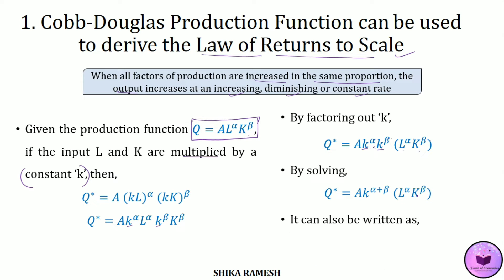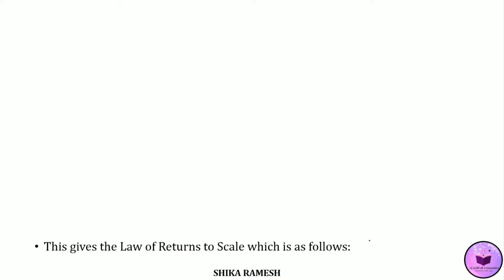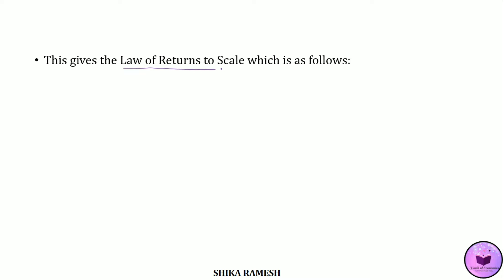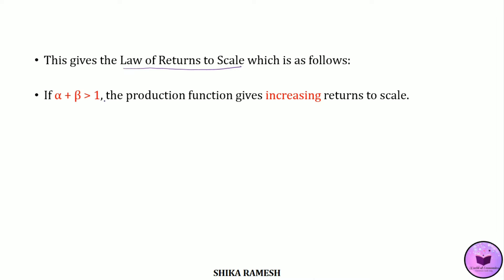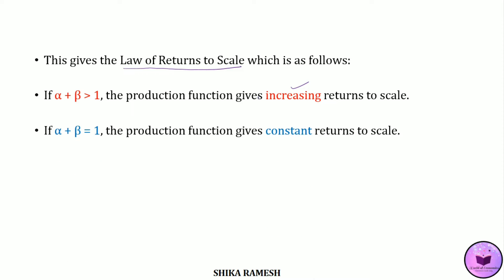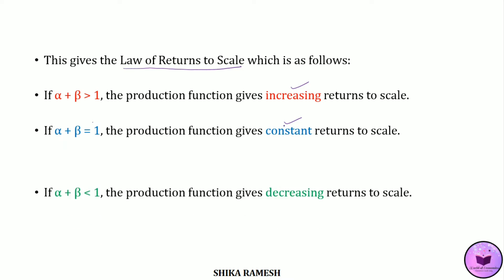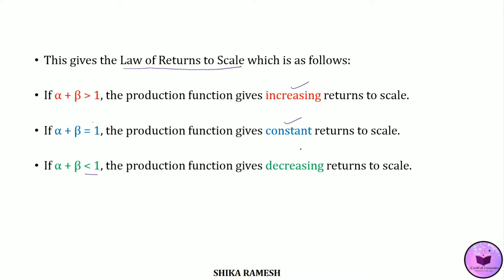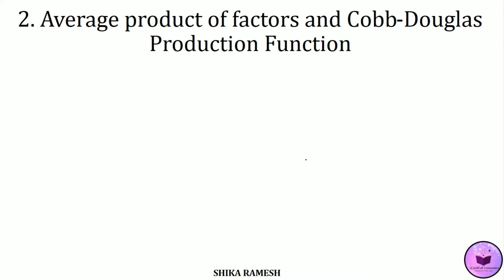This simplifies to Q* = K^(α+β) multiplied by AL^α K^β. If alpha plus beta is greater than 1, the production function implies increasing returns to scale. If alpha plus beta equals 1, it gives constant returns to scale. And if alpha plus beta is less than 1, it gives decreasing returns to scale.